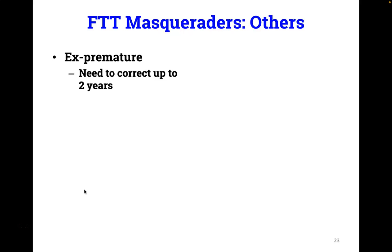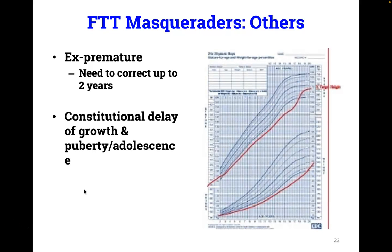A quick note: if the baby is born premature, you need to correct for gestational age up to two years of age when measuring weight and height. If you don't do that, they will appear to be falling behind. Lastly, there is a scenario called constitutional delay of growth in adolescence — otherwise known as late bloomers. This is idiopathic, though there likely is a genetic component as there's often a family history of a late pubertal growth spurt. Similar to familial short stature, there is slowing of linear growth in the first three to four years of life with stature and weight crossing down percentile lines.